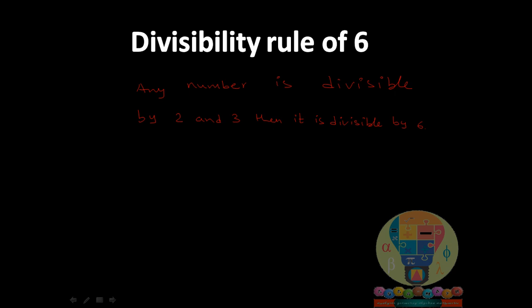Why do we take only 2 and 3? Because when we list the factors of 6, they are 1, 2, 3, and 6. We write them as pairs: 1×6 and 2×3. Here, 2 and 3 are co-primes and also factors of 6. So if a number is divisible by both 2 and 3, it is divisible by 6.